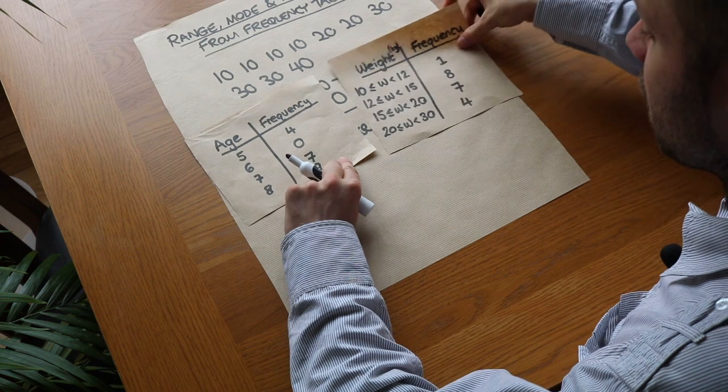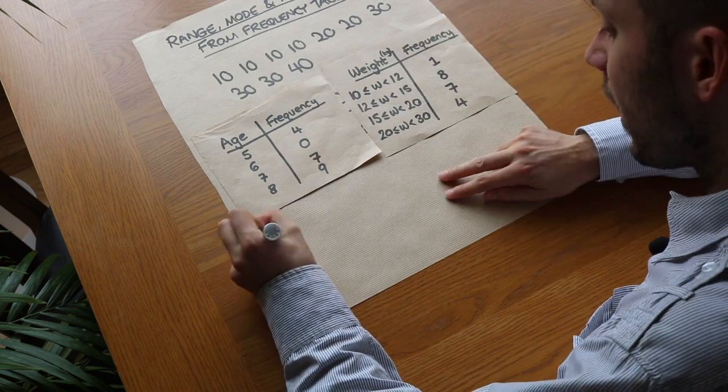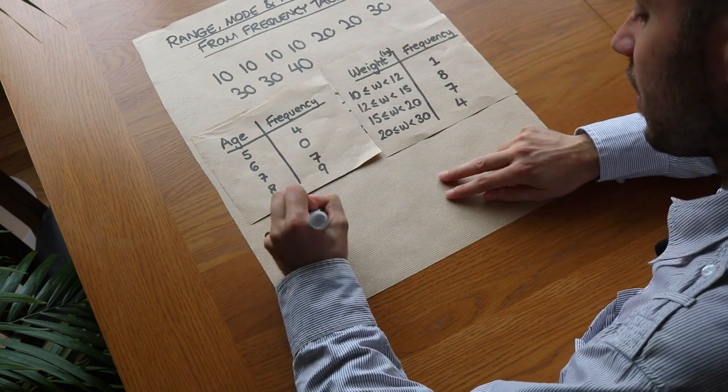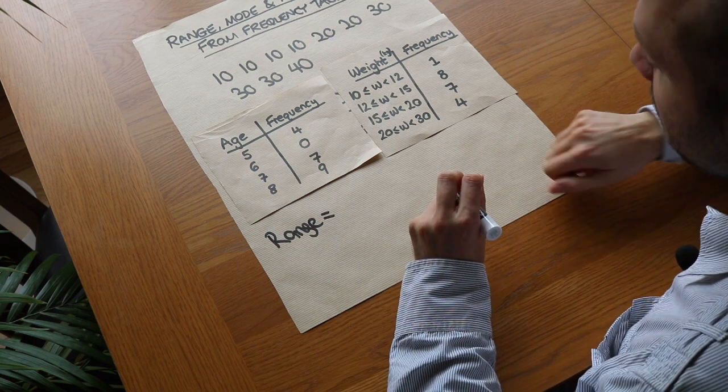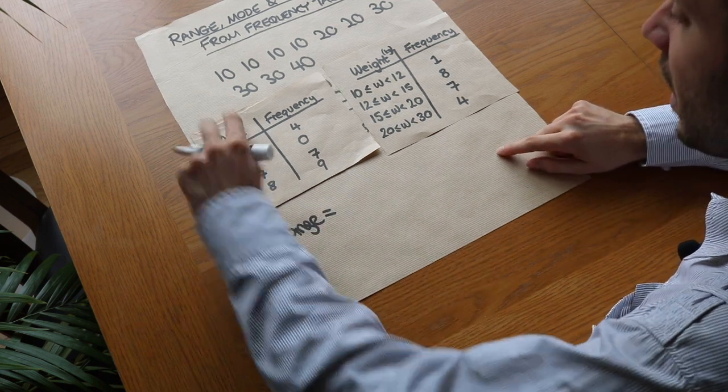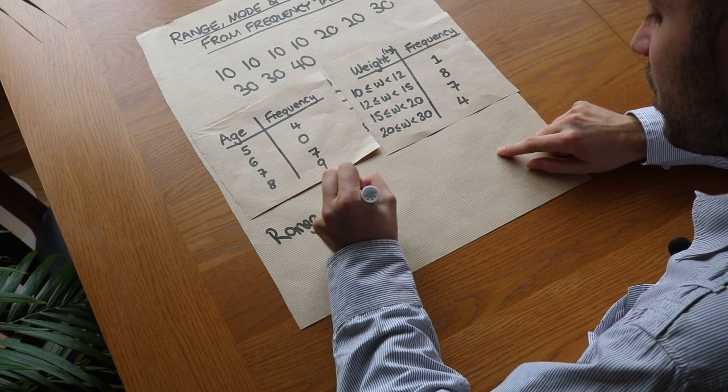Right, let's do it. For this first one here, the range is just the maximum age minus the minimum age, the maximum value minus the minimum value, so it's just 8 minus 5, which is equal to 3.